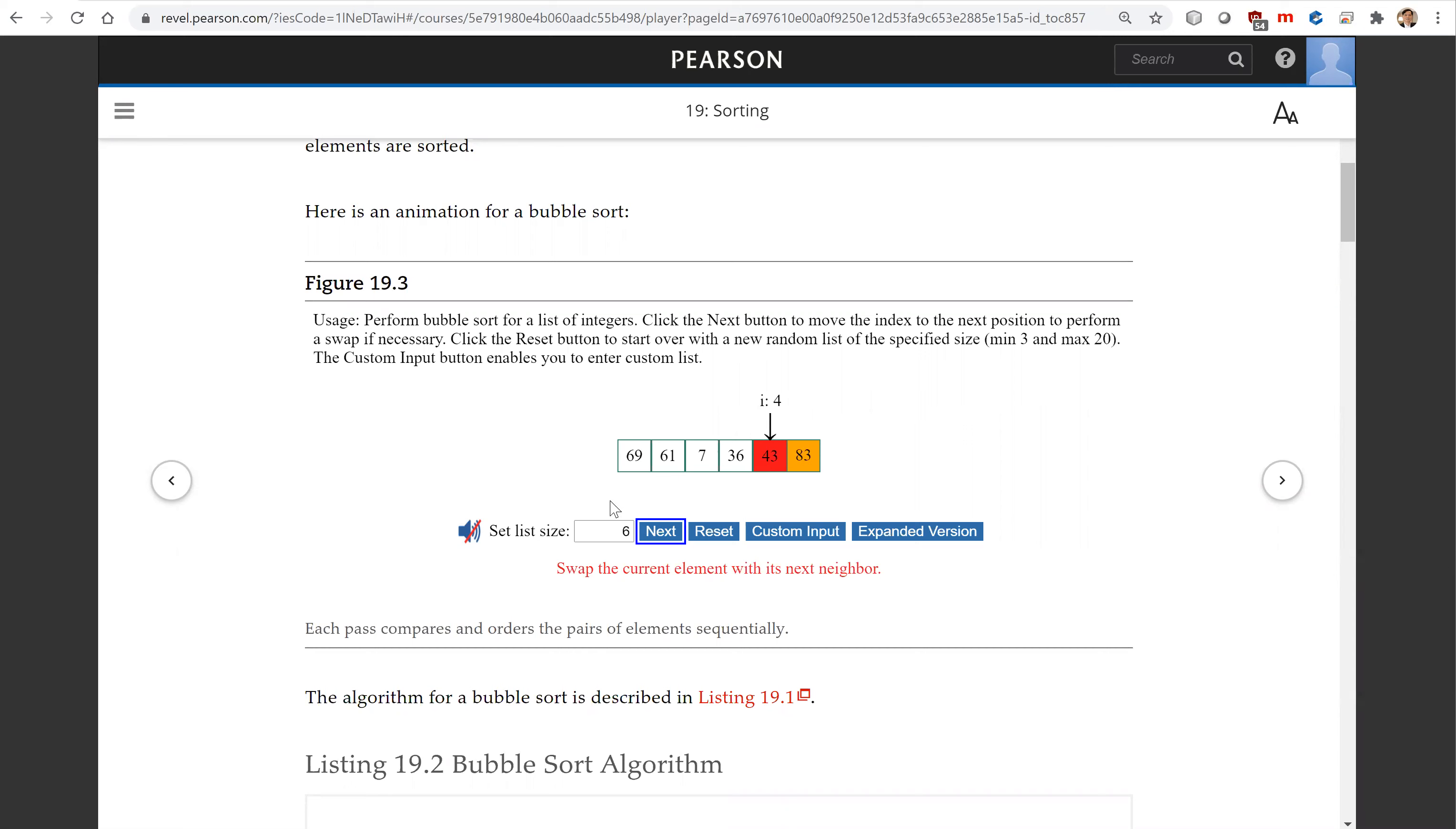So continue the next pass. 69, 69, 69. So that's another pass. And the maximum you need is four paths or five paths for six elements.